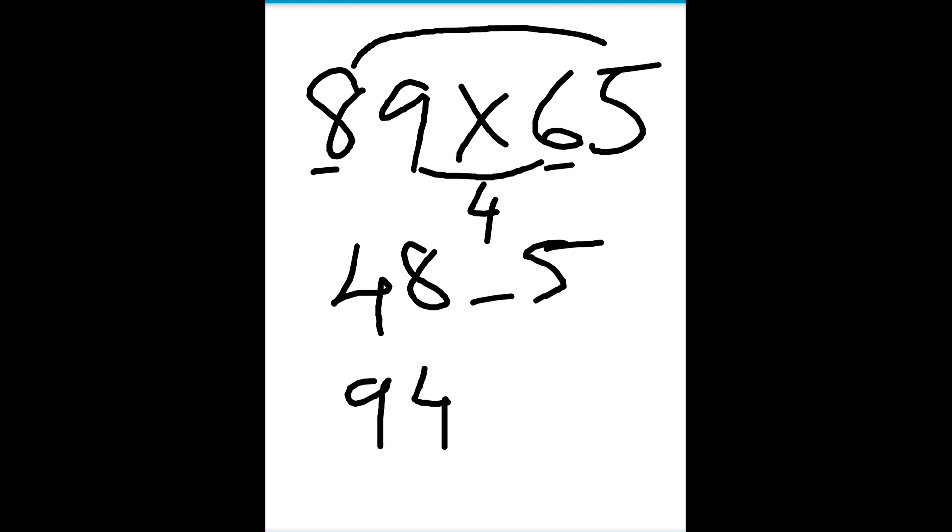So we'll write 4 and 9 will be taken as carry here. But we already have 4 there, so 4 plus 4 is 8 and 9 is taken as carry. So add 9 to this 48, it will be 57. So the answer is 5785.